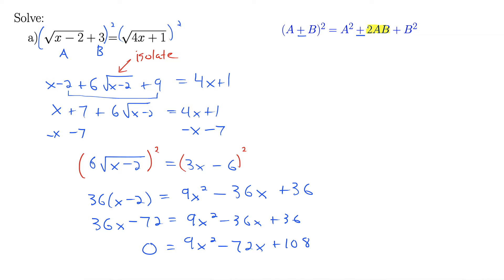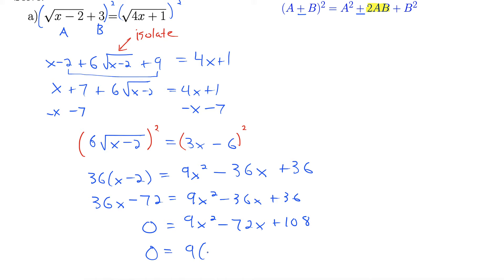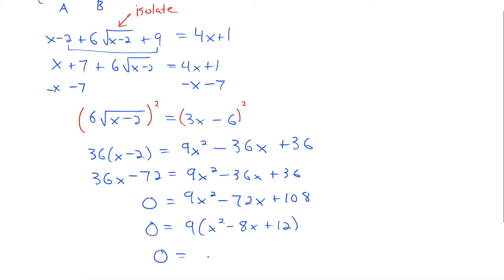Now, if you want to have a really bad day, start factoring this thing right here. You can spend a good afternoon doing that, and only then will you realize you could have factored out a GCF all along. Note that all three of these terms are divisible by 9. So out comes a GCF of 9, so this is actually 0 equals 9 times x squared minus 8x plus 12. We can just divide that 9 out.